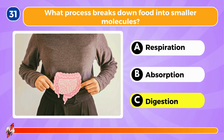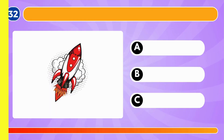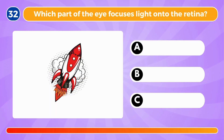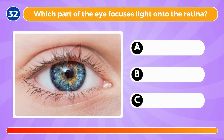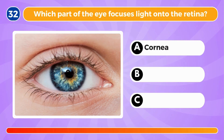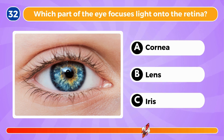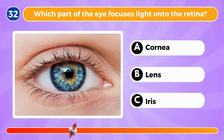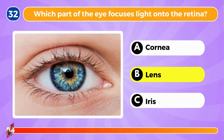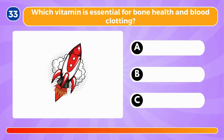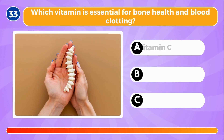What process breaks down food into smaller molecules? The process is called digestion. Which part of the eye focuses light onto the retina? It's the lens.